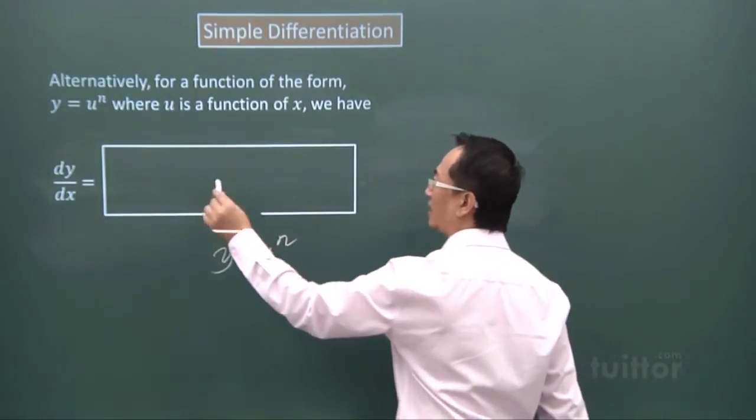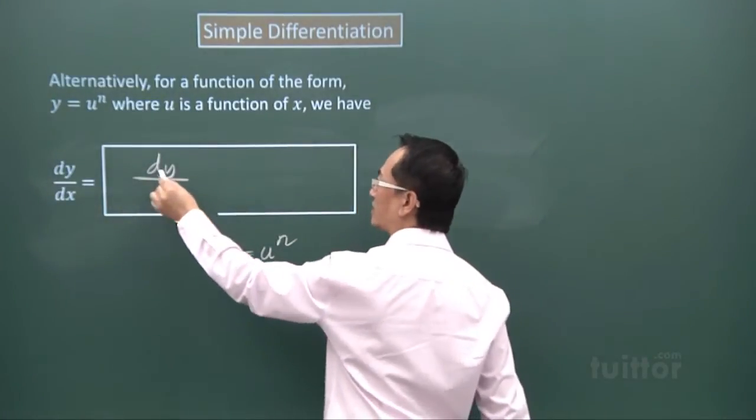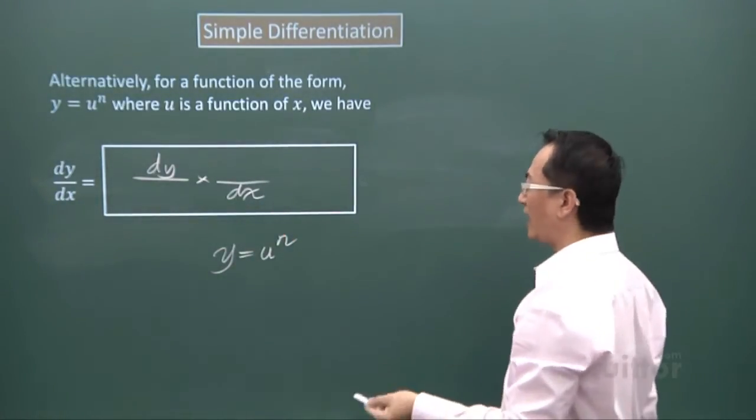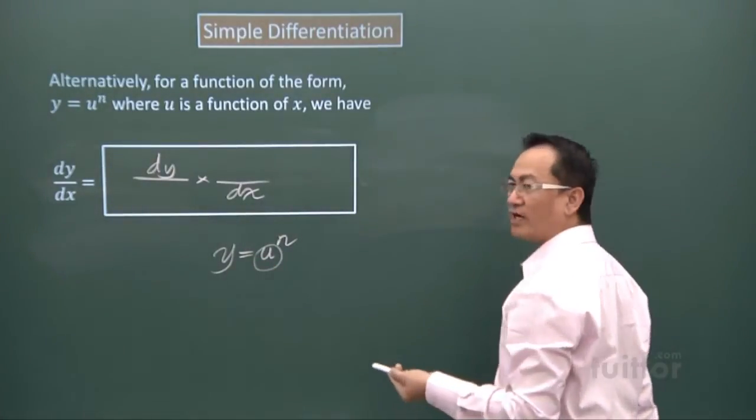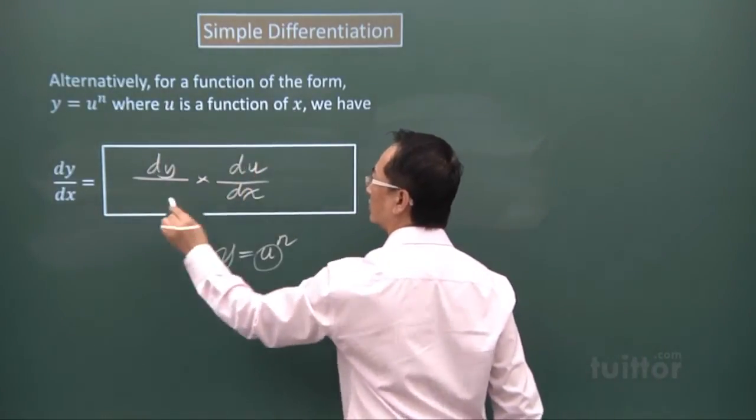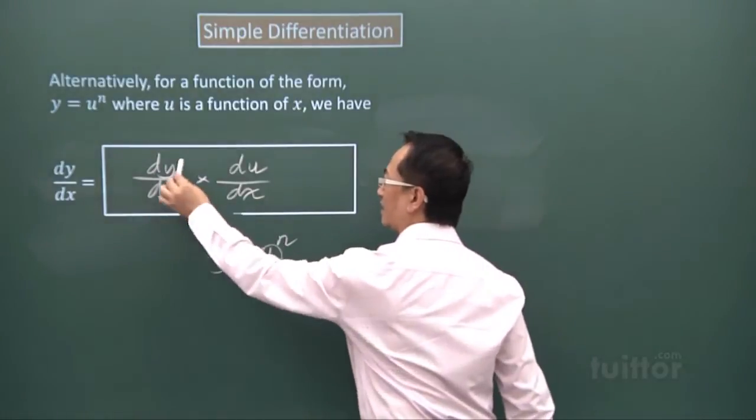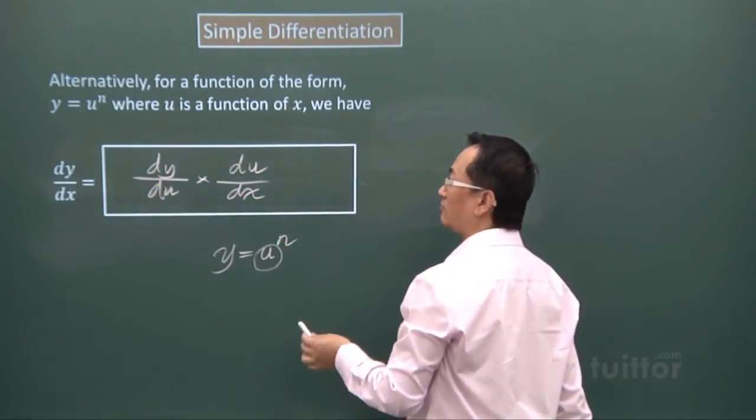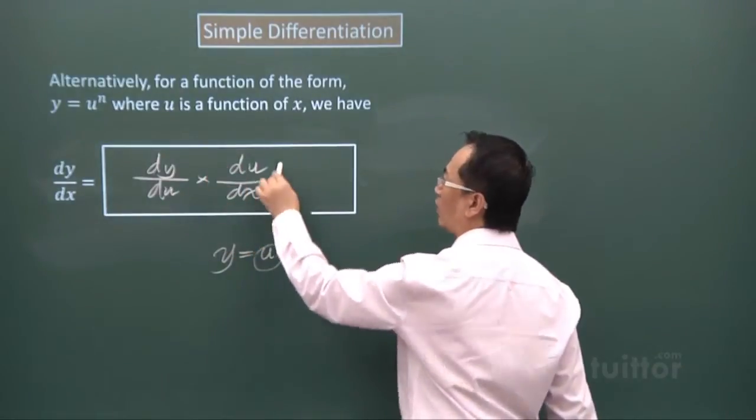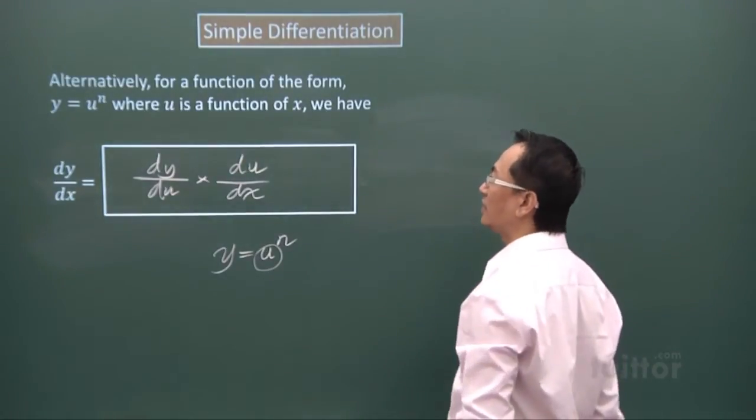Which is dy/dx equals dy/du times du/dx. If you have another symbol like u here, which is a function of x, then you will consider dy/du times du/dx. These are symbols of differentiation. You are not supposed to do cancellation. You take this symbol as a whole; it cannot be split up. But for how we form the chain rule equation, you take this, drop it here, take this, drop here, in between.